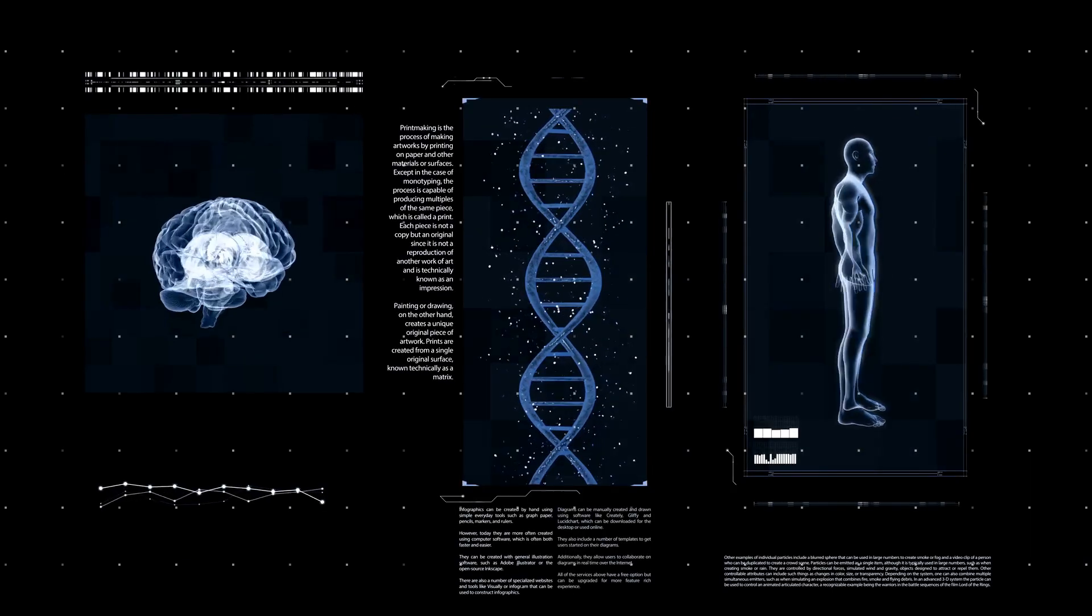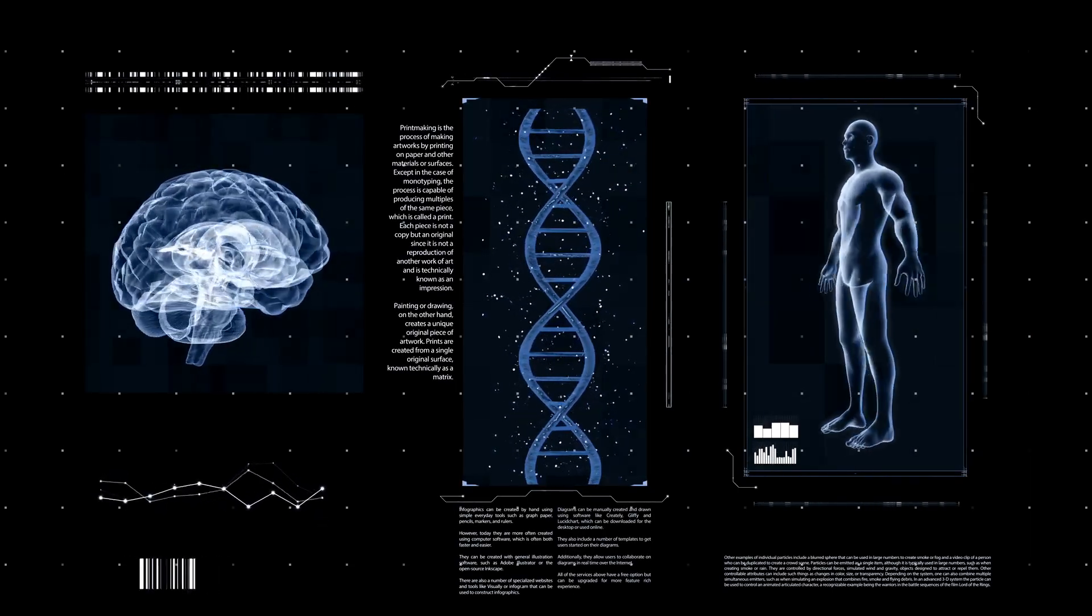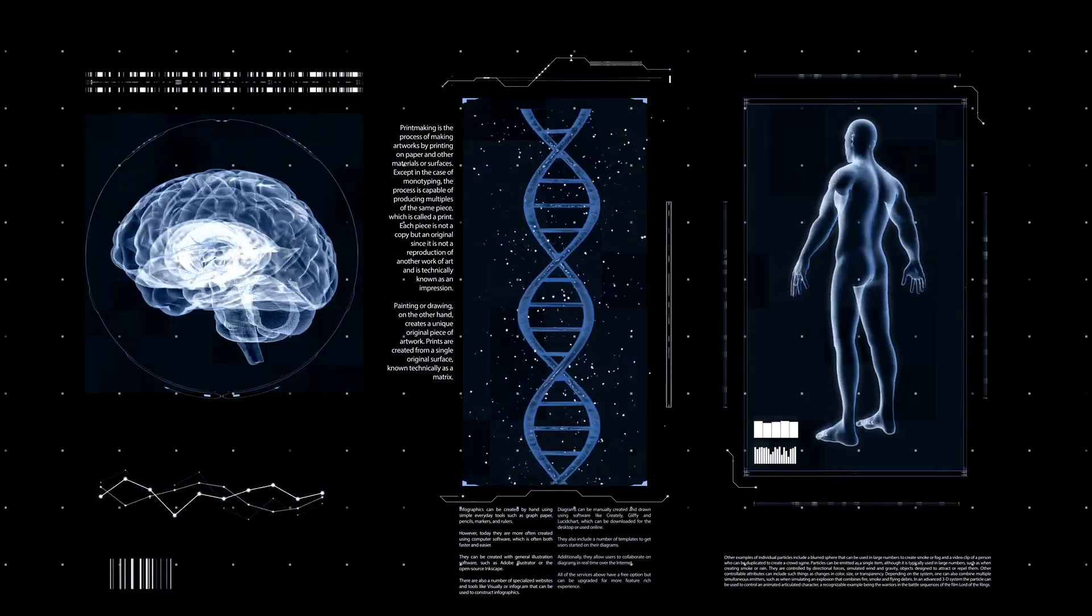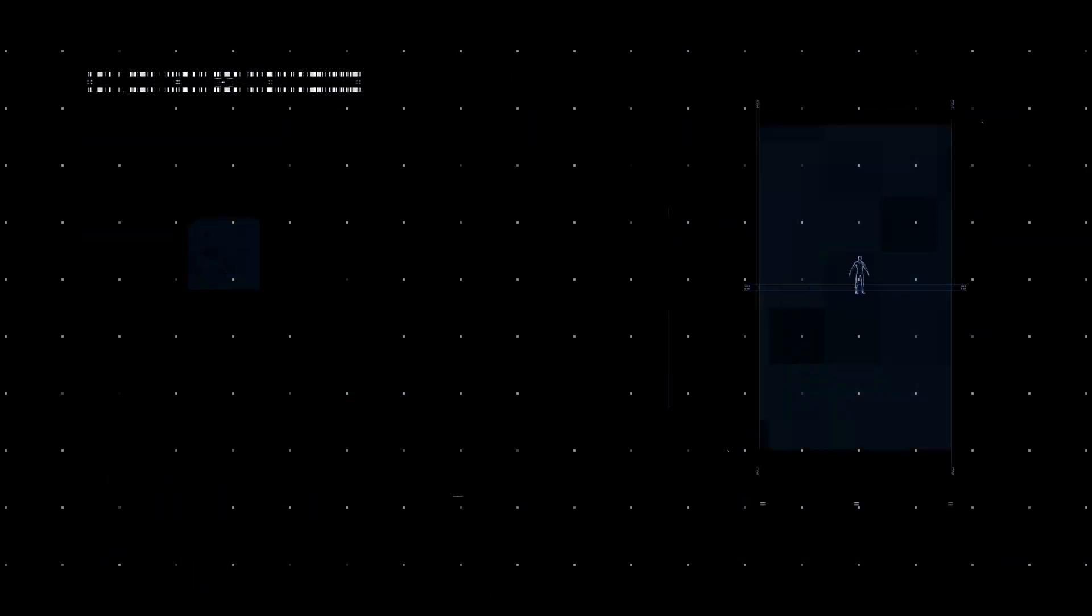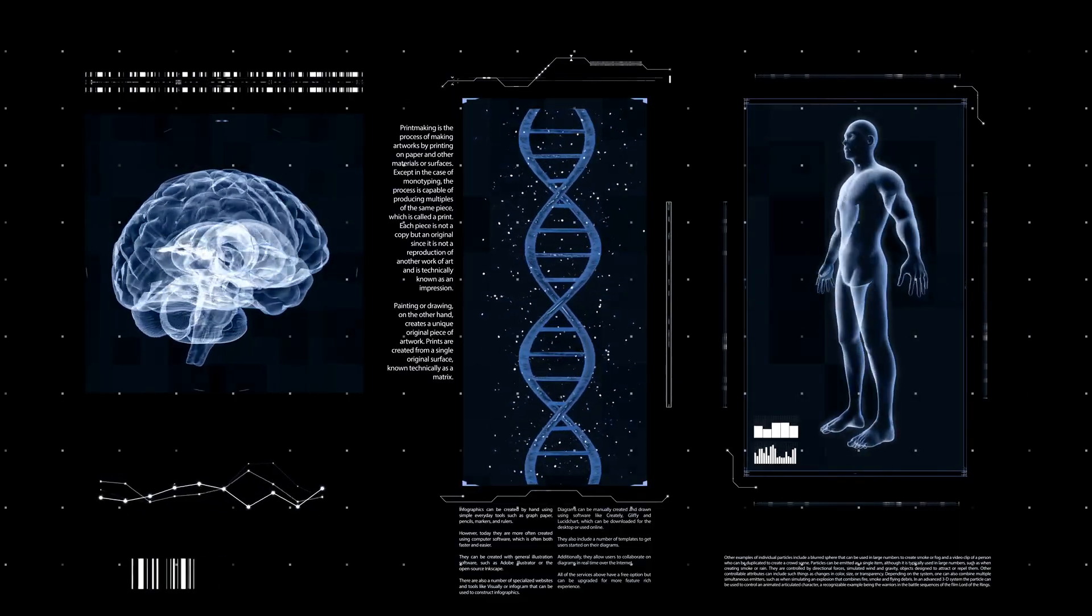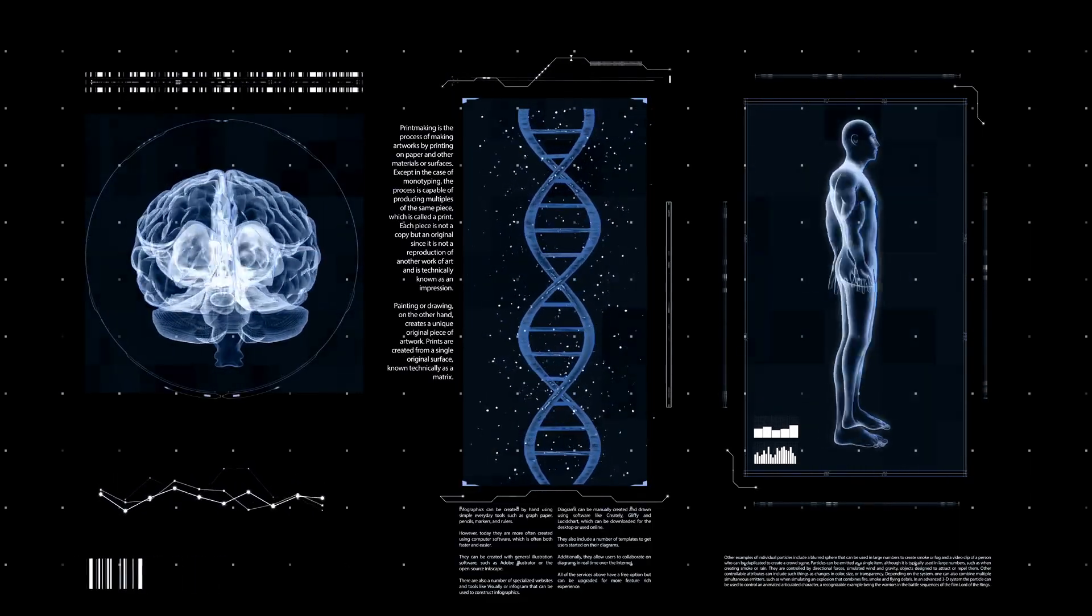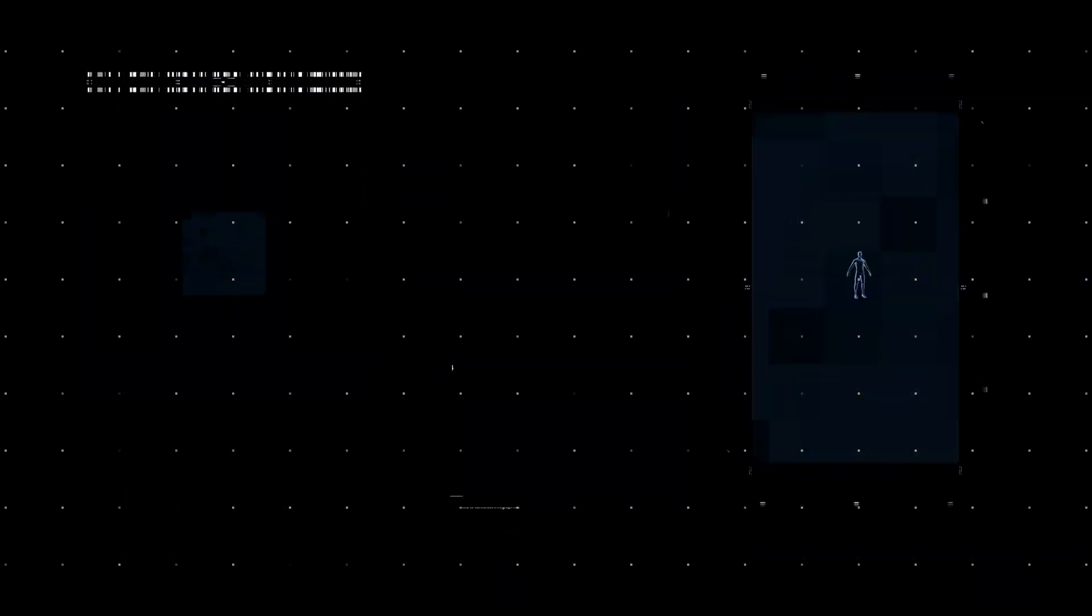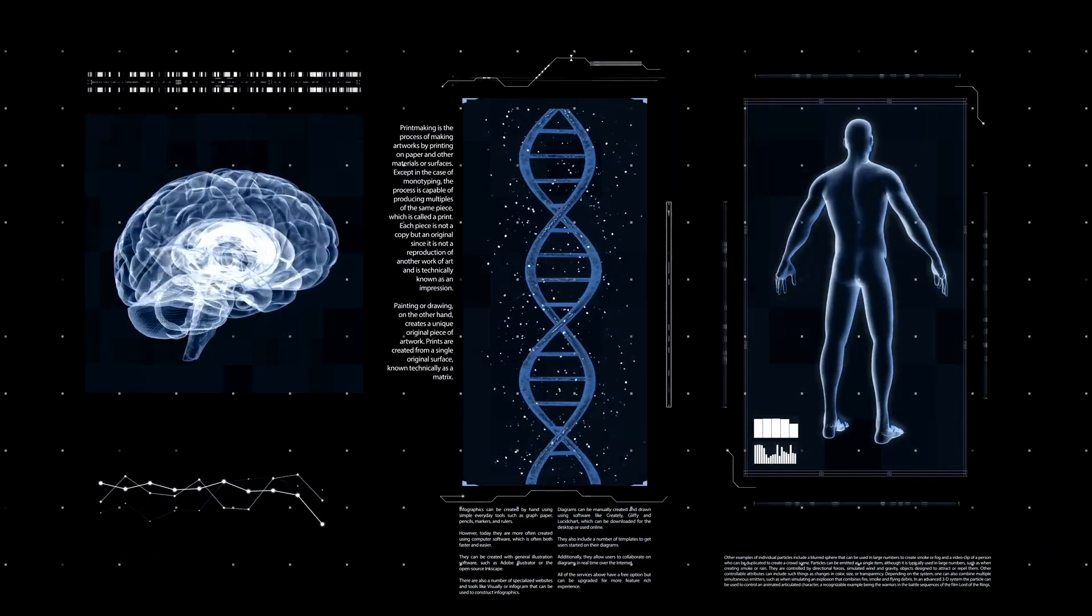Scientists are now developing epigenetic drugs designed to do just that: reset the switches. Instead of just targeting a faulty protein, these therapies aim to correct the underlying instructions. Several of these drugs are already being used to treat certain cancers, with many more in the pipeline. Imagine a future where we could treat diseases not by destroying rogue cells, but by simply reminding them how to behave.